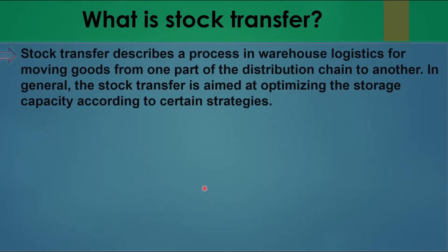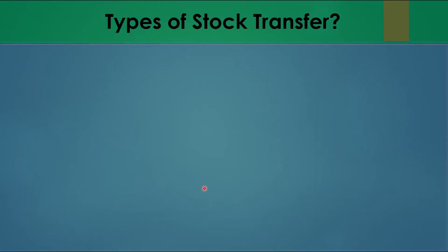So what is exactly stock transfer? Stock transfer describes a process in a warehouse or store for moving goods from one part of the distribution chain to another, or from one part of storage to another. In general, stock transfer is aimed at optimizing storage capacity according to certain strategies. It may depend on the storage size or warehouse — how we manage stock internally or externally. In a nutshell, stock transfer is just movement of stock from one place to another, physically or in the system.